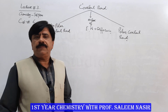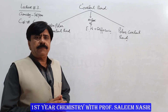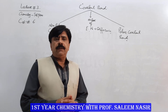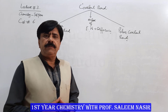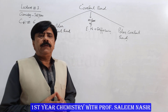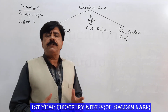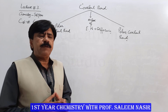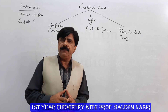Students, last time we studied about the covalent bond and its types. We divided it into three types on the basis of the number of electrons shared in the bond: single covalent bond, double covalent bond, and triple covalent bond.